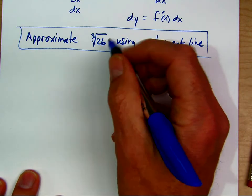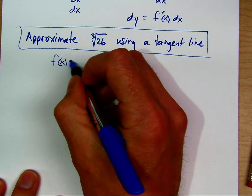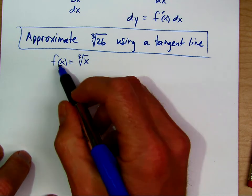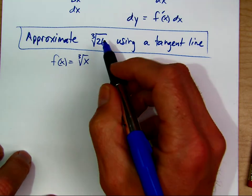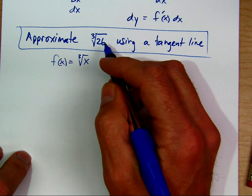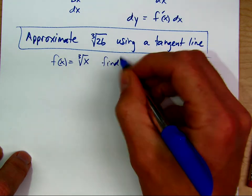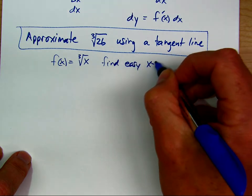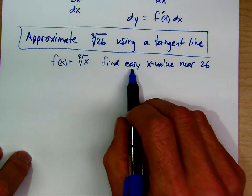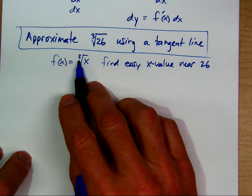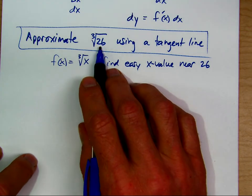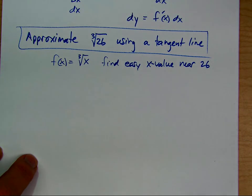We'll say that the function is the cubed root of x. We need to find a tangent line to this function at a point that's easy to evaluate without a calculator. If we're dealing with the cubed root of 26, we want to find an easy x value near 26. So if we're trying to do the cubed root of 26, we have 27 right next to it, and we know the cubed root of 27 — that's easy to compute.